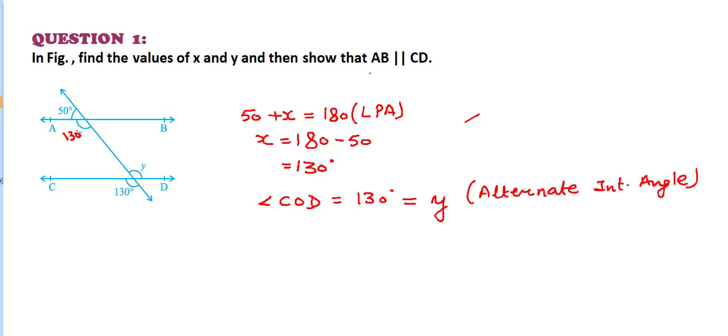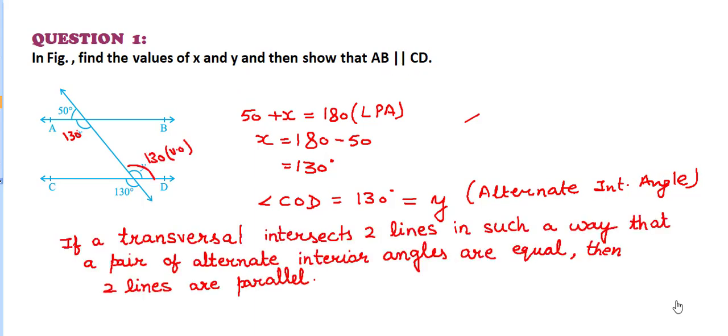Now for the second part, show that AB is parallel to CD. If a transversal intersects two lines in such a way that a pair of alternate interior angles are equal, then the two lines are parallel. In our case, which angles are the alternate interior angles? That is angle A, and suppose this is point M and this is point N.